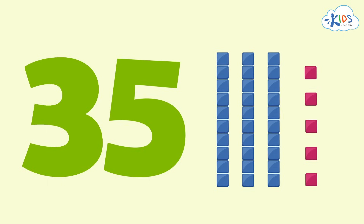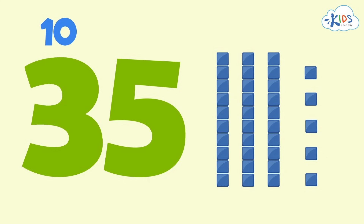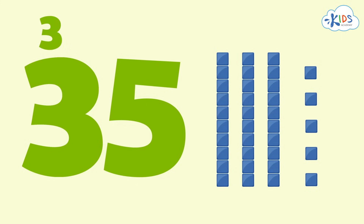The next place over is the tens place. The number in the tens place is always ten times the value of the number shown — it's like counting by tens to the number you see. In our number 35, the three is in the tens place. We can find its value by counting by tens three times: 10, 20, 30. The value of the three is 30.